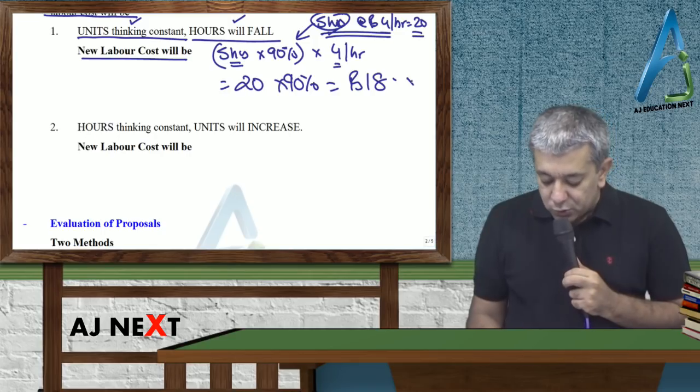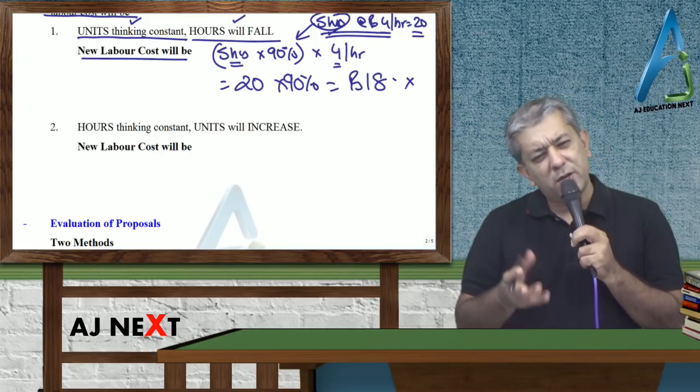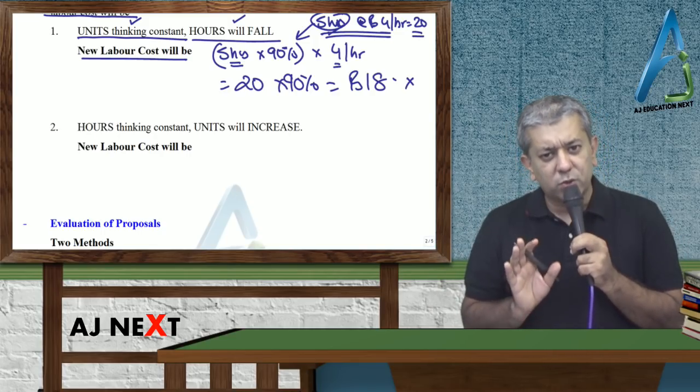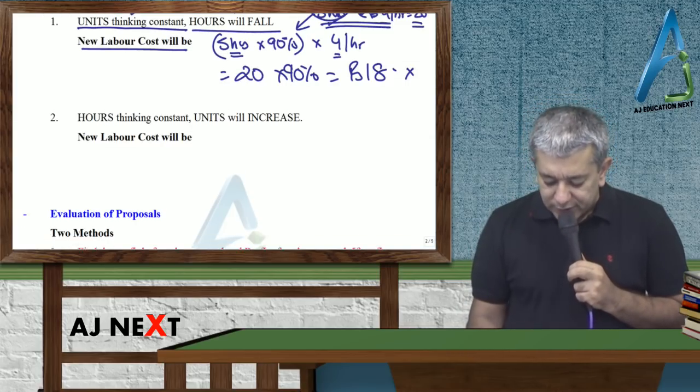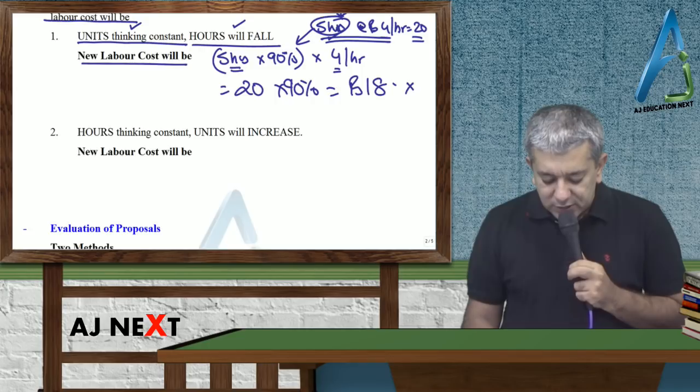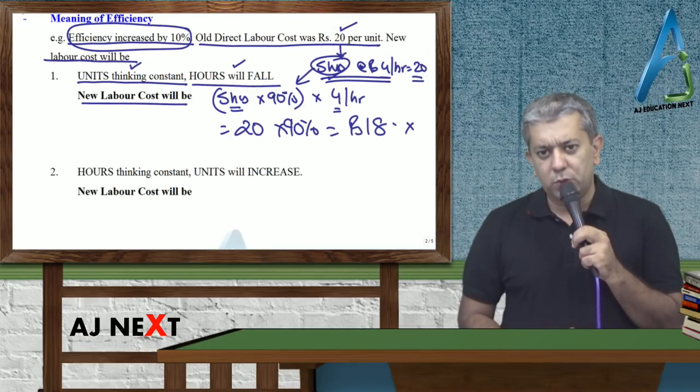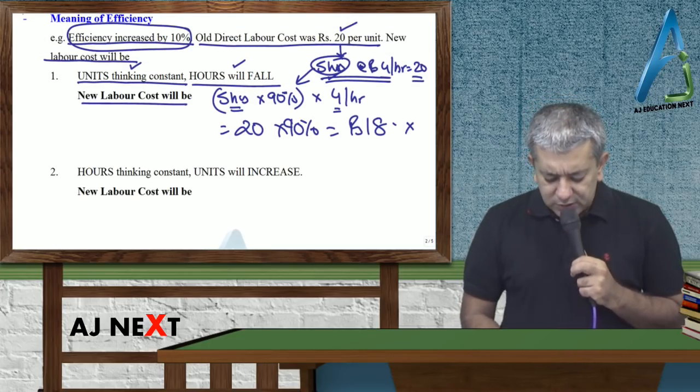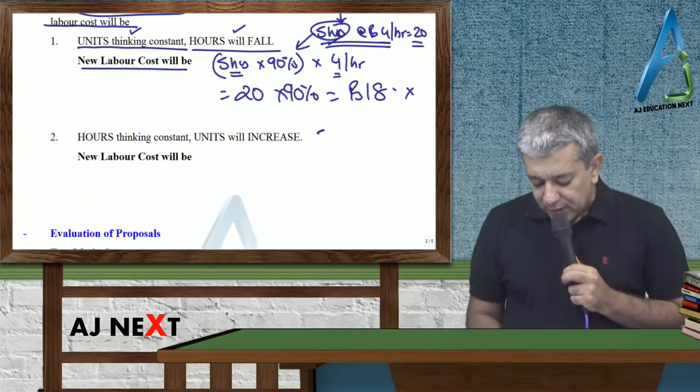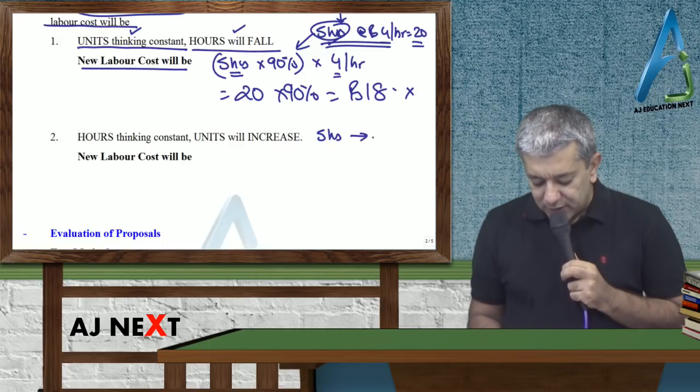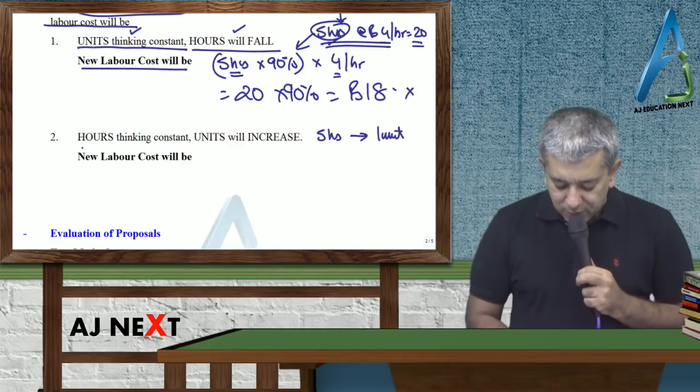Other way: ICAI usually ye wale version ke liye nahi chahta hai. Although tum log ja bhi sakte ho. Dousra, efficiency increased by 10%. Toh chaloo, thik hai. Dousra matlab: Pahle 5 hours kaam karke, kitna units bana deyte thay? One unit. Dousra matlab kya hoyega? Hours thinking constant, units will increase.